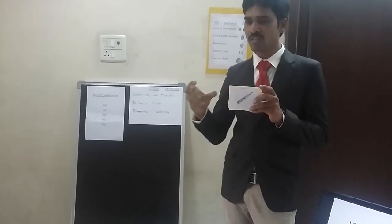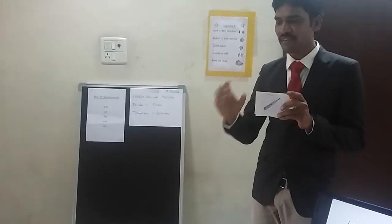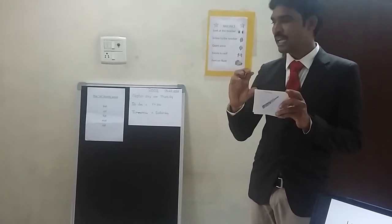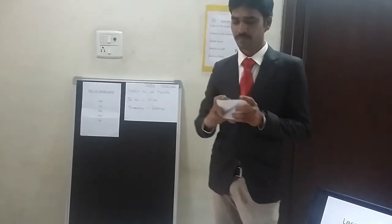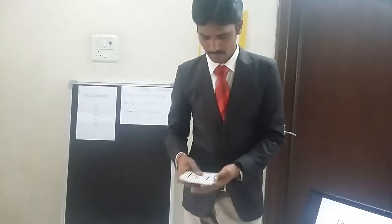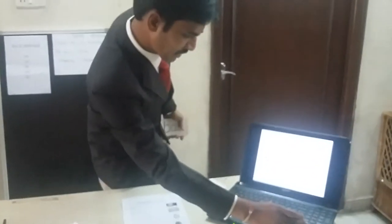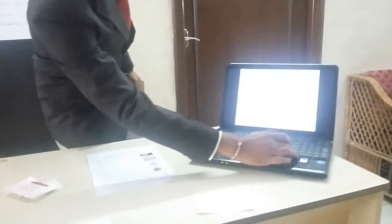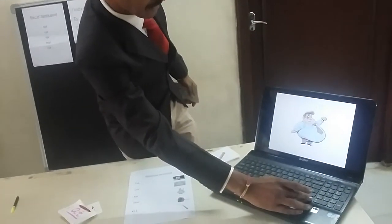So there is a common sound: cat, bat, mat, rat, and fat. So today we are going to learn the AT family words. Now look at this presentation: bat, mat, cat, rat, fat.